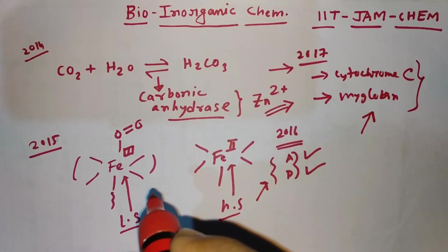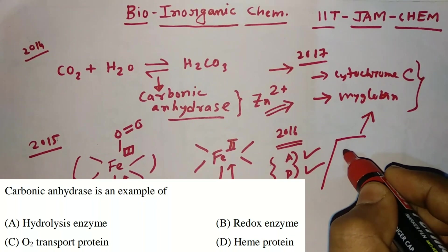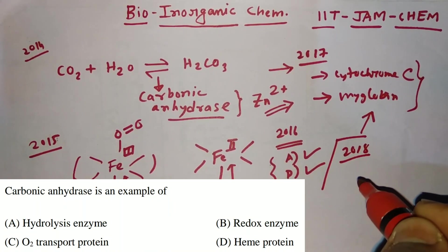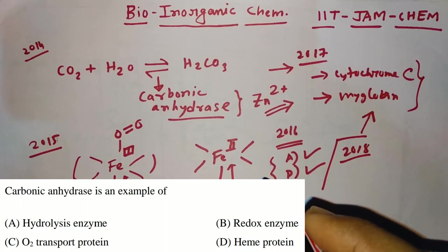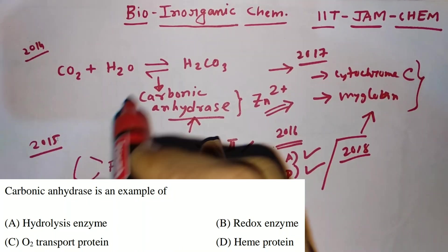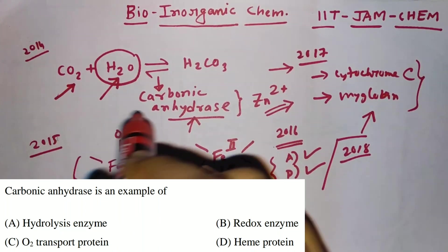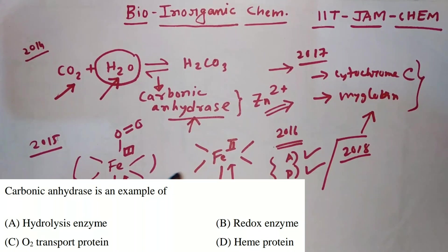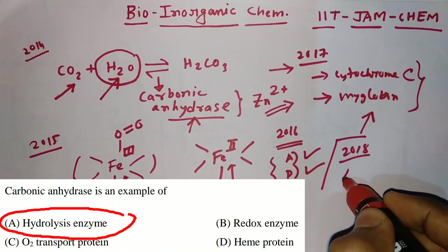Coming to JAM 2018, the question says carbonic anhydrase is an example of — hydrolysis enzyme, redox enzyme, O2 transport protein, or heme protein. As we already know, carbonic anhydrase catalyzes the hydration of CO2, which is a hydrolysis reaction. So the correct answer is option A: hydrolysis enzyme.